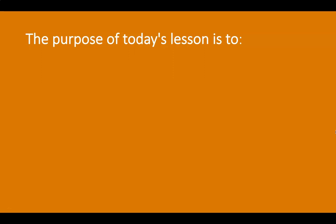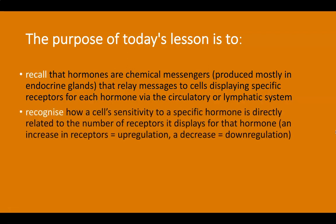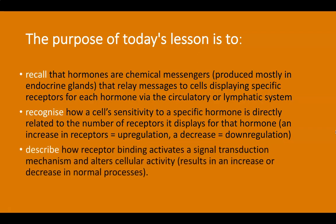The purpose of today's lesson is to recall that hormones are chemical messengers produced in endocrine glands that relay messages through the circulatory or lymphatic system, to recognize how cell sensitivity to specific hormones relates to receptor numbers, and to describe how receptor binding activates a signal transduction pathway. You can pause here and write a summarized version of these learning goals.